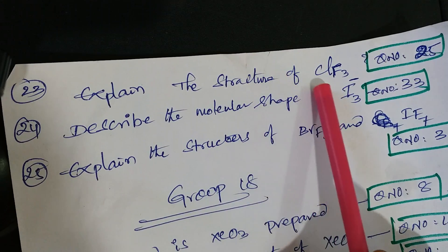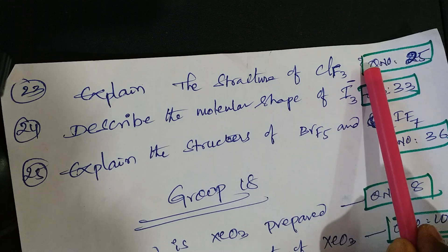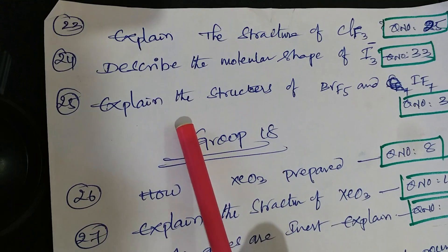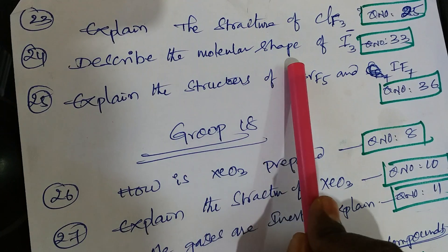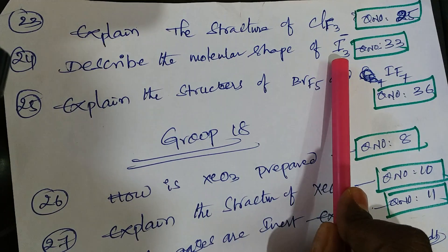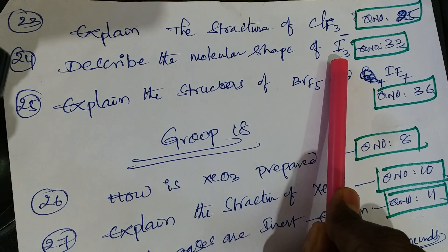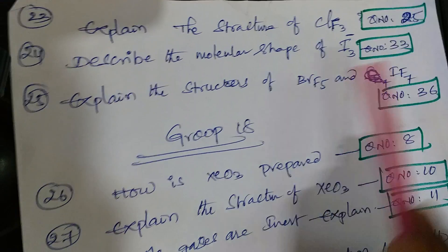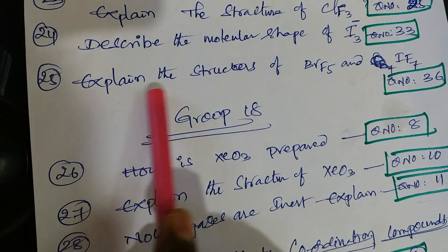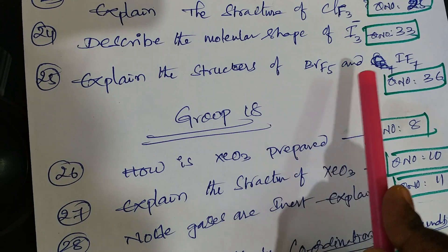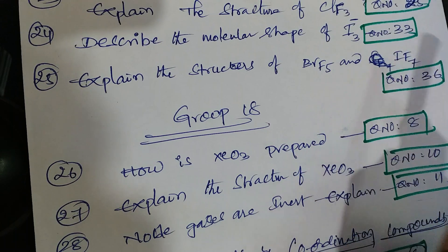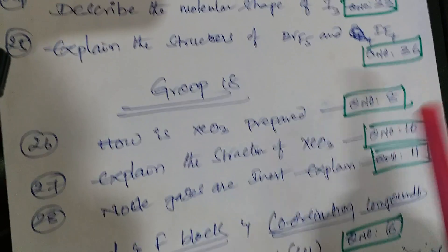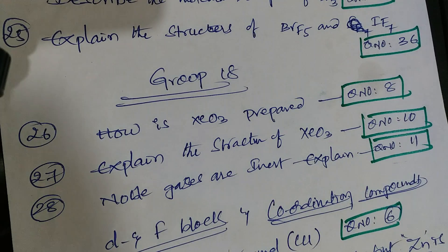Next one: explain the structure of ClF₃ - that is question number 25 from material. Describe the molecular shape of I₃⁻ - question number 33 from material and Telugu academy. Explain the structure of BrF₅ and IF₇ - that is question number 36 from material and Telugu academy.